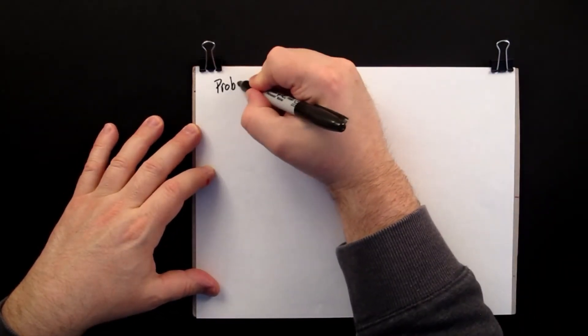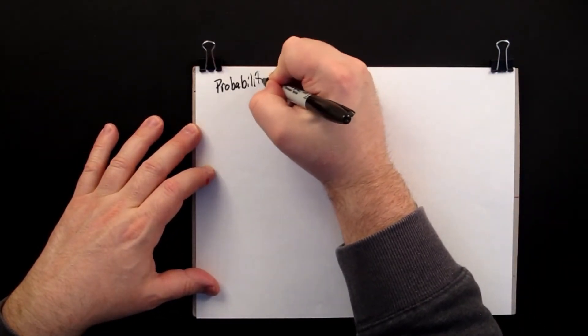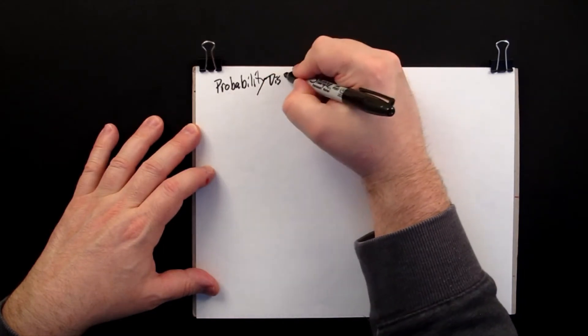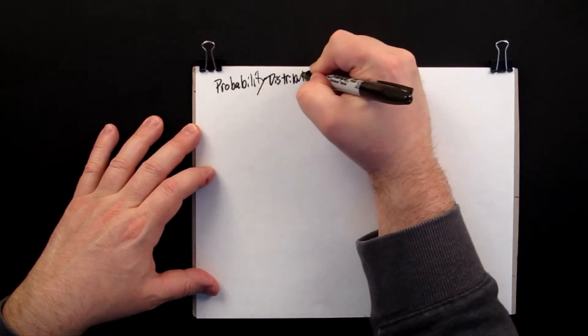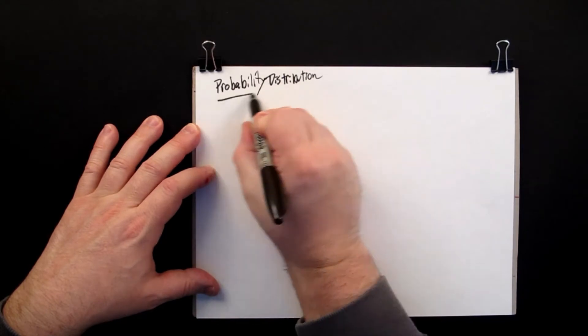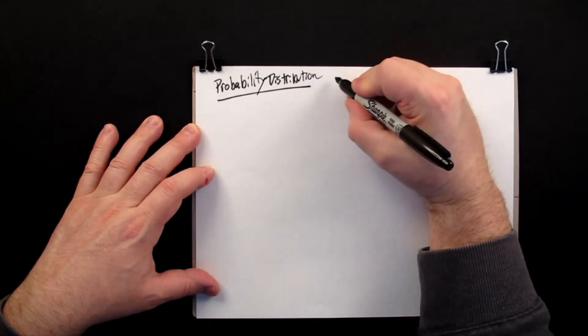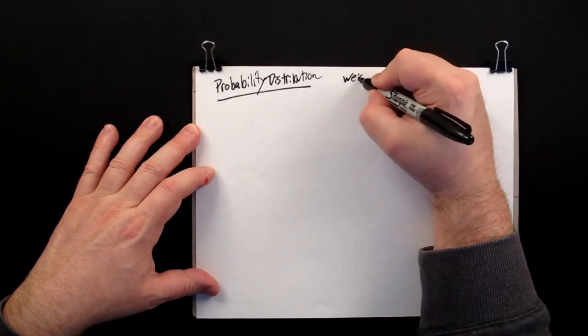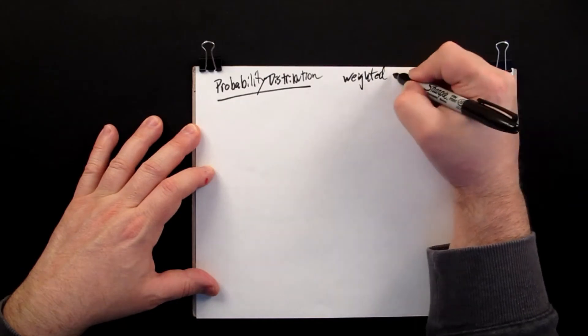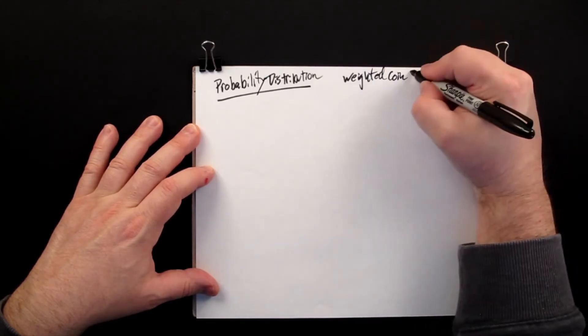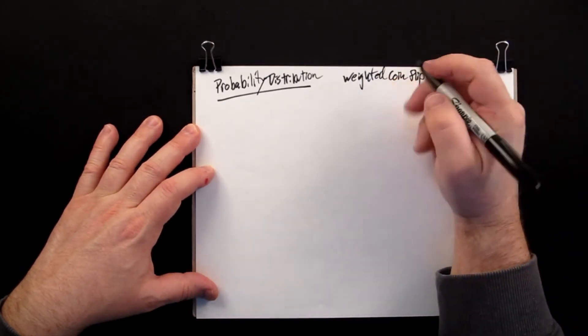Probability distribution. This time we're looking at the weighted coin flip, which is also known as the Bernoulli distribution.